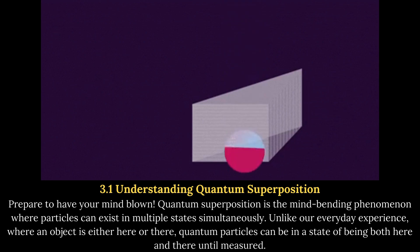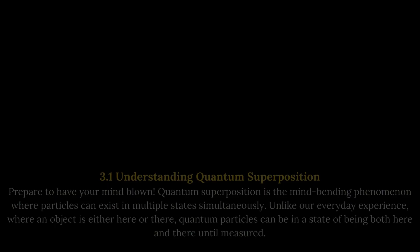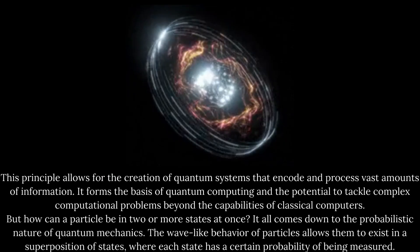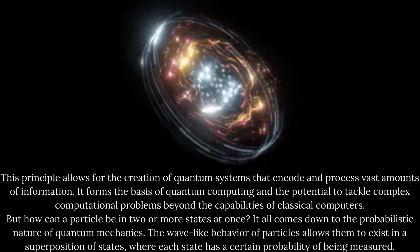quantum particles can be in a state of being both here and there until measured. This principle allows for the creation of quantum systems that encode and process vast amounts of information.